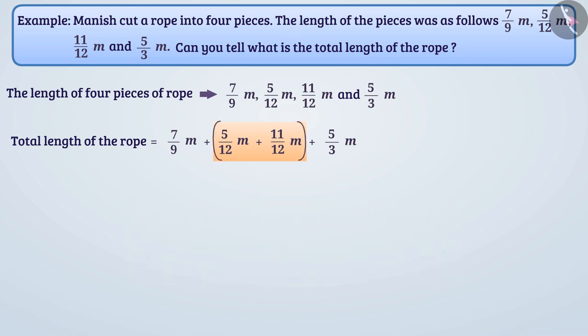we can simplify this bracket first by taking 5/12 and 11/12 in parenthesis. This will give us result of the brackets 16/12 which we can write 4/3.